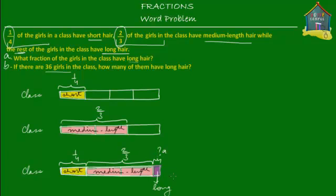If the entire class is one whole, then one fourth have short hair, two thirds have medium length hair, and the remainder have long hair. So the fraction with long hair equals one whole minus one fourth minus two thirds. If we take out the short-haired and medium-haired girls from the whole class, the remaining fraction is the girls with long hair.